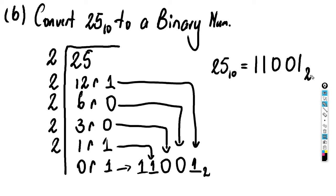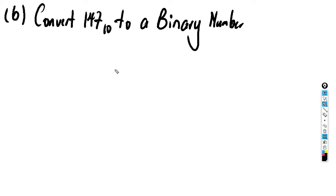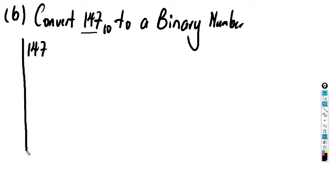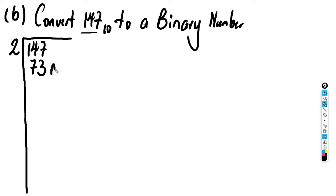All right guys, so the next example says convert 147 to a binary number — 147 to the base 10. We're going to have a lot to divide here, so let's put this up and draw it right down. The first thing we're going to do is divide by two — and we should get 73, since 73 multiplied by two would be 146, leaving a remainder of one. Then we divide 73 by two again and get 36, since 36 times two gives you 72, leaving a remainder of one.